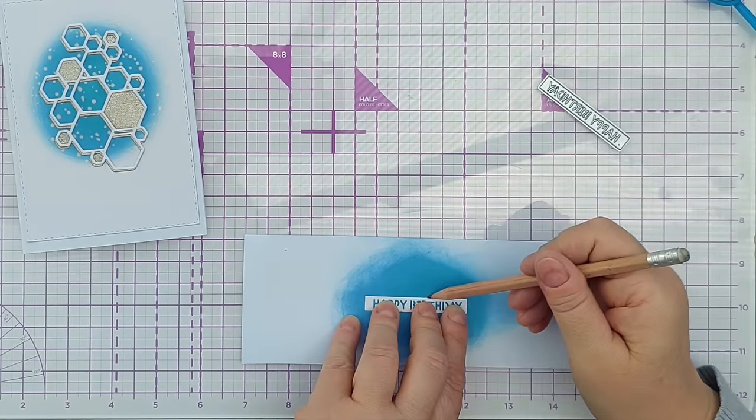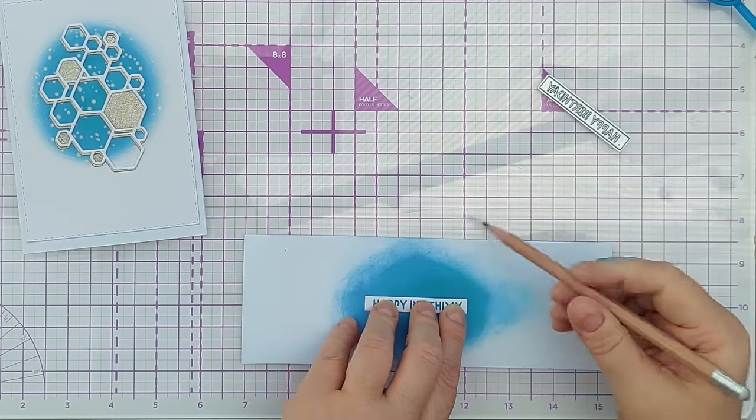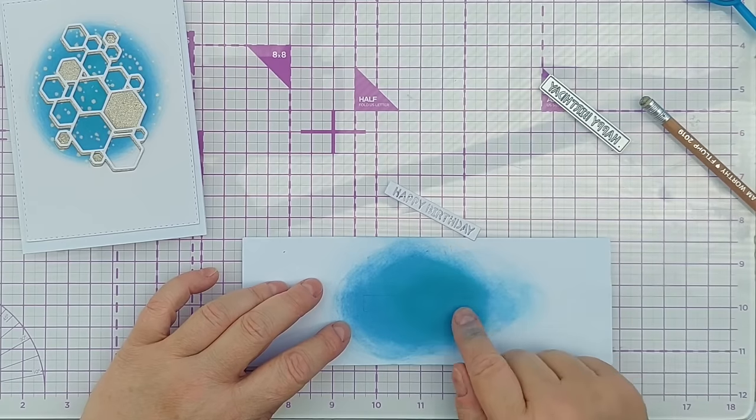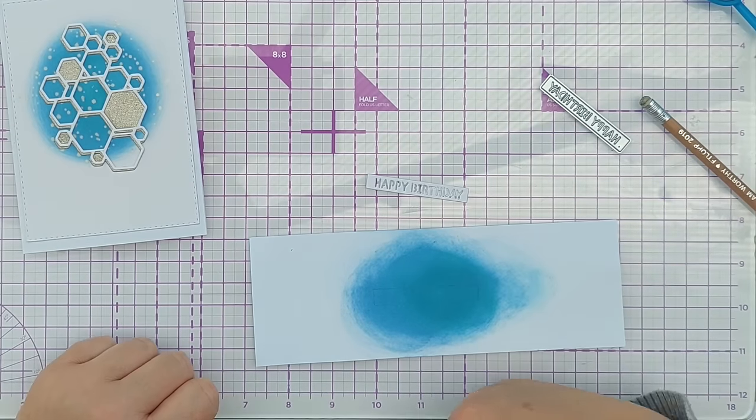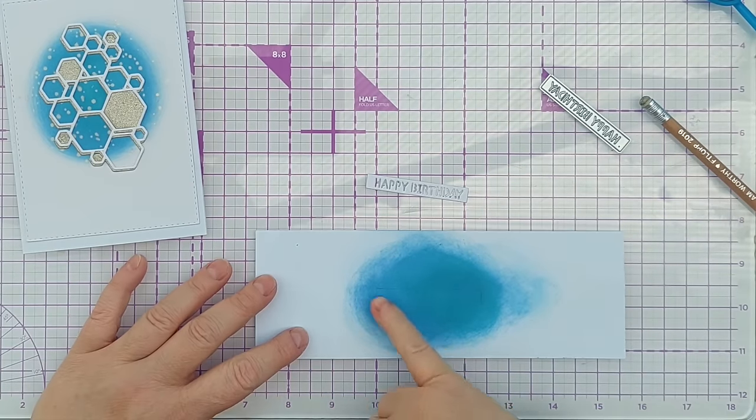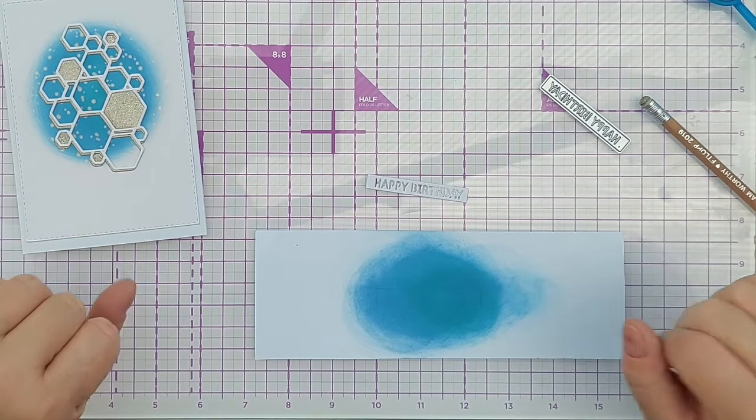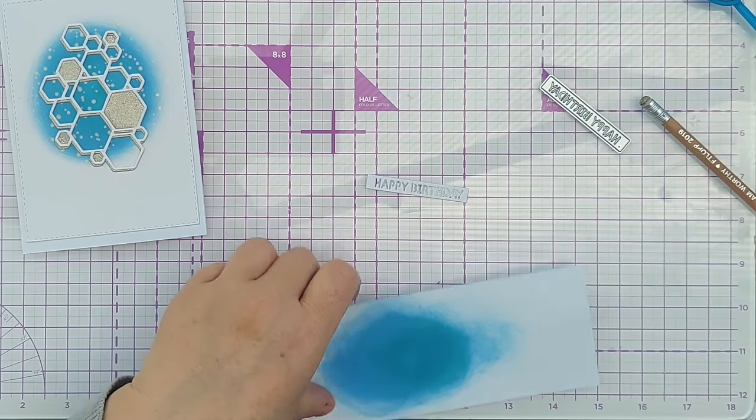Just draw around it so I know how much to cut out. I'm going to cut within those lines so that the blue is completely hidden behind the happy birthday. Of course you could leave a bit of a border if you wanted, but I'm not going to do that today.